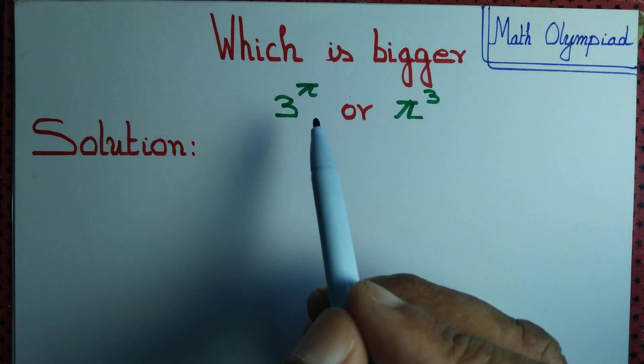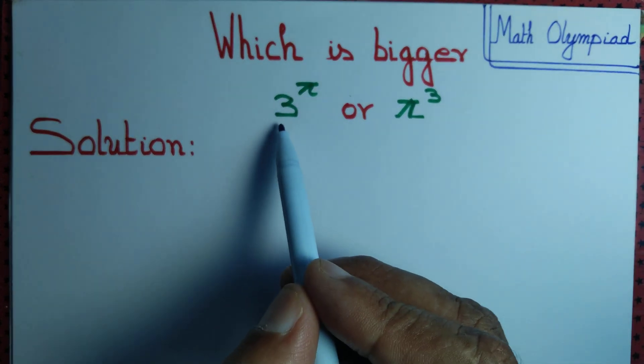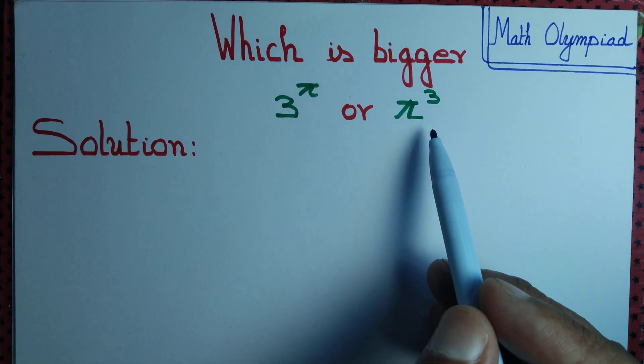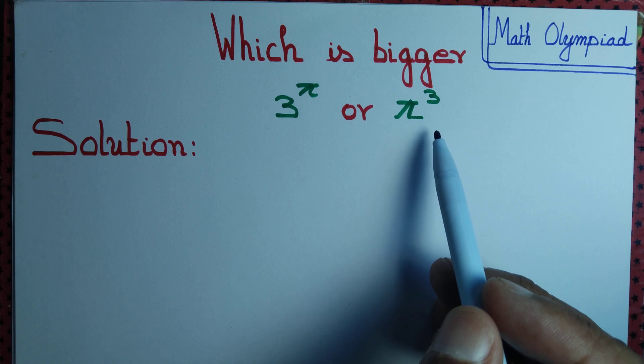Let us try to determine which one is a bigger number: 3 to the power pi, or pi to the power 3.